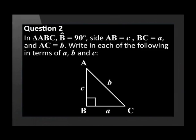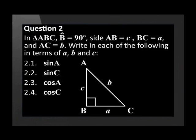Question 2. In triangle ABC, angle B equals 90 degrees. Side AB has the length C, BC has the length A, and AC has the length B. Write each of the following in terms of A, B, and C: sine A, sine C, cos A, cos C, tan A, tan C.